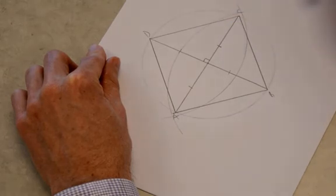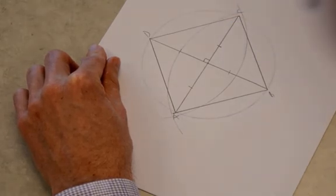Therefore, ABCD is a square. So, that's how you construct a rhombus, a rectangle, and a square.